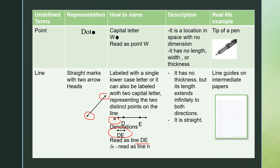Line N is read using the lowercase letter. For its description, a line has no thickness, but its length extends infinitely in both directions — that is what the two arrowheads represent. It is also straight. A real-life example is the line guides on intermediate paper that you use when answering your module.